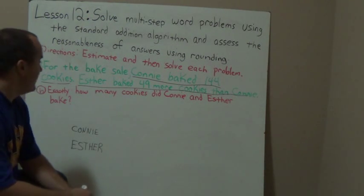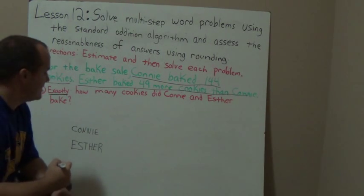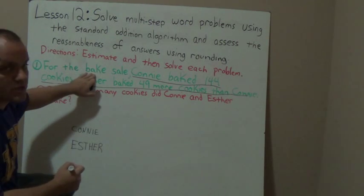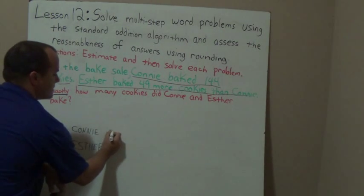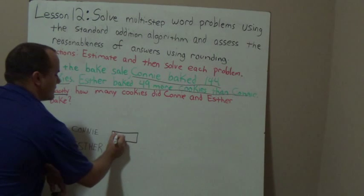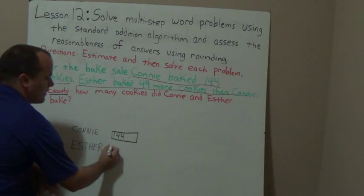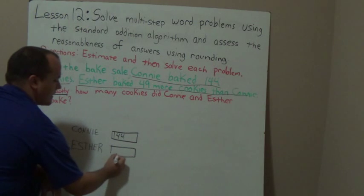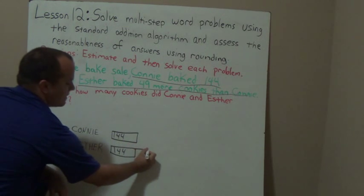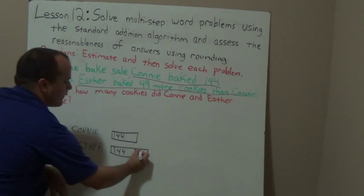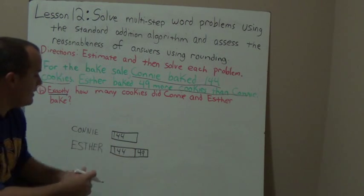Okay, so here's letter B. It wants to know exactly how many cookies did Connie and Esther bake. What's different about this one is it wants to know exactly how many. Looking back at my information: Connie baked 144 cookies — let me draw a quick tape diagram to show Connie's 144 cookies. Then we have Esther — she baked 49 more cookies than Connie, so I'm going to redraw Esther's tape diagram with 144 plus an additional 49. This helps me realize that Esther baked more — exactly 49 more cookies.